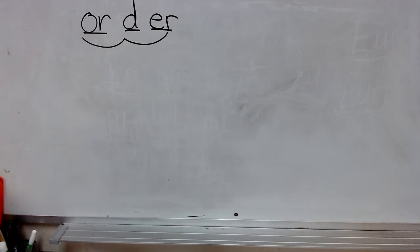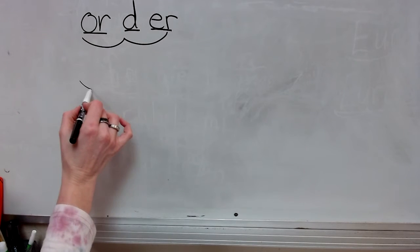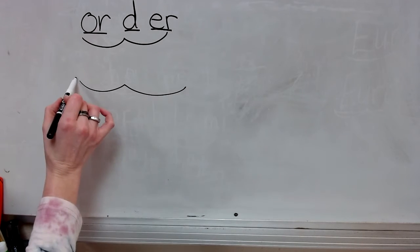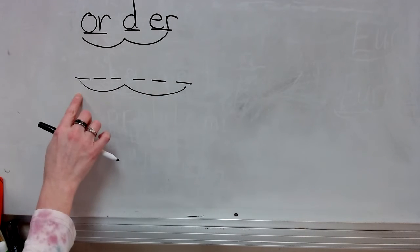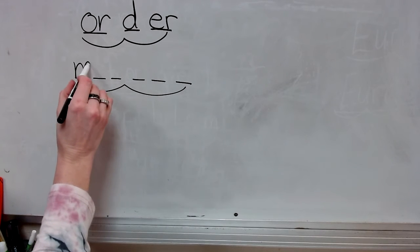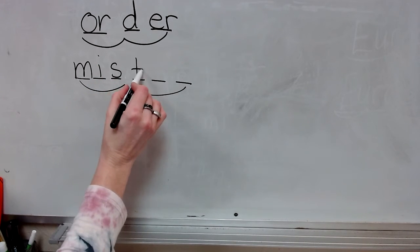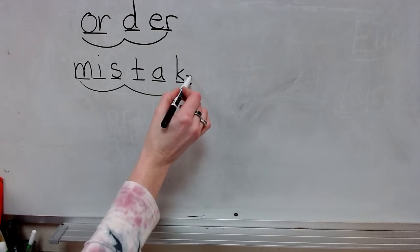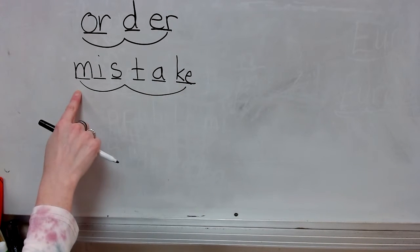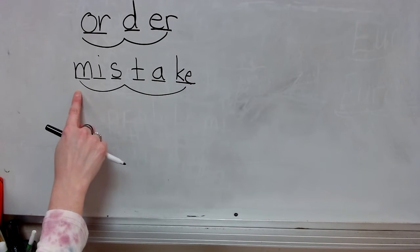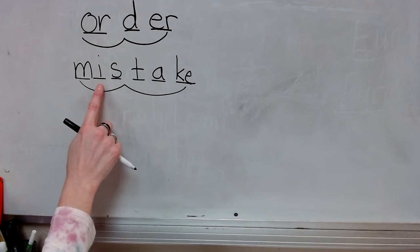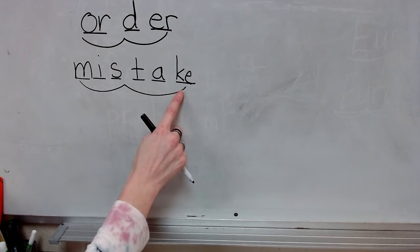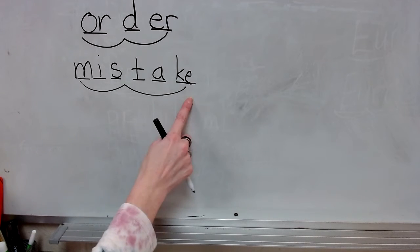The next word is mistake. What word? Syllables: mis-take. Stretch: mis-t-ake. Write the spelling for mistake. Check it and correct it. What word? Spell mistake. Yes — mistake.